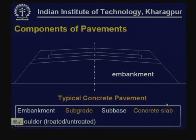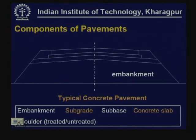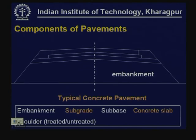Similarly, for a typical concrete pavement we can have embankment, subgrade, above which we can have a base, over which we place the concrete slab. Here again we can have shoulders which are either treated or untreated. In the case of concrete pavement we have concrete slab, granular or treated bases, subbase, embankment material, and shoulders.